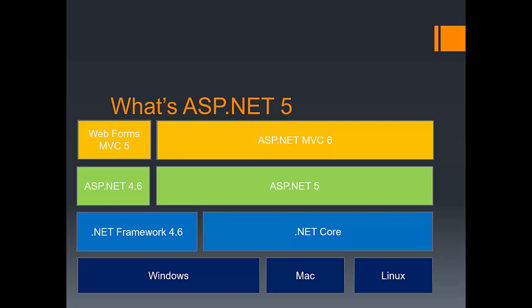Let's start by positioning ASP.NET 5. ASP.NET 5 is not a replacement of ASP.NET 4.6, but it is an alternative solution that, instead of running only on .NET Framework 4.6, runs on top of .NET Core, which allows ASP.NET 5 to run not only on Windows but also on Mac and Linux. On top of ASP.NET 5 you can run a variety of frameworks including ASP.NET MVC 6, but you cannot run WebForms or ASP.NET MVC 5 — those last two require ASP.NET 4.6.